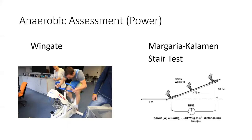A more cost-effective option is the Margaria-Kalamen test, where the athlete performs a 4-meter run-up and then ascends stairs, alternating and skipping steps. You measure the vertical height of the last step, and using body weight, gravity, the vertical distance moved, and time, you can calculate power in watts. This is less expensive compared to the Wingate, though you do need a staircase. If you're not working with elite athletes, the Margaria-Kalamen test is likely what you'll use to assess anaerobic power.